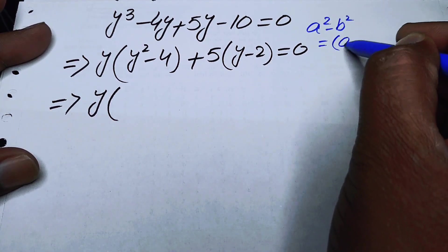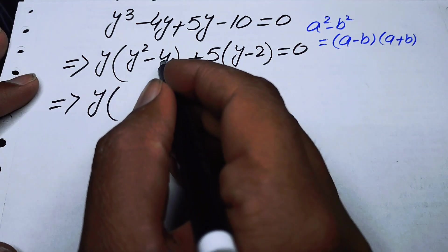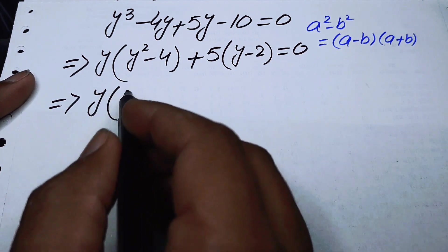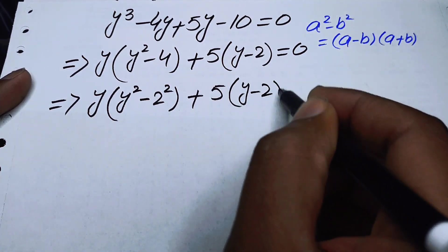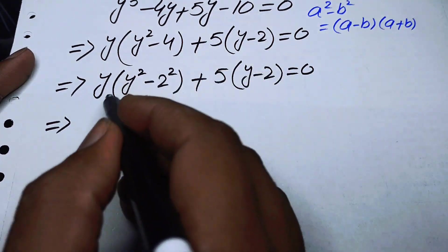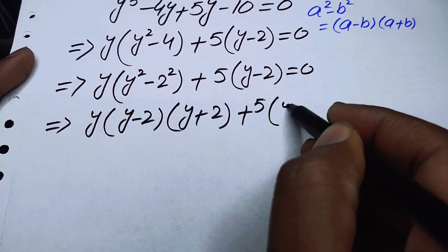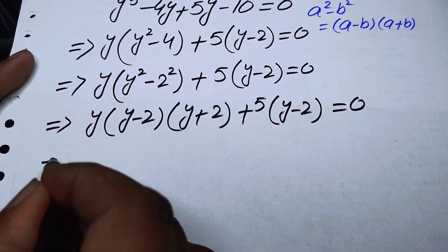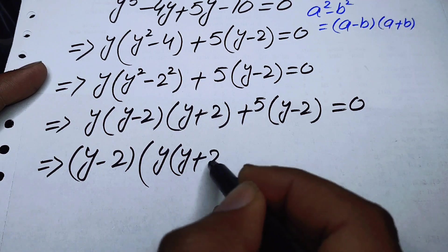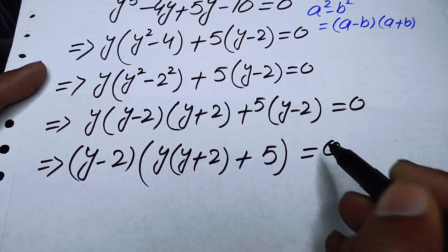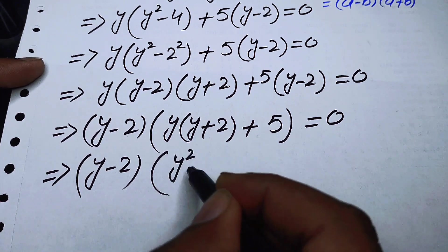We can apply the well-known identity: a squared minus b squared equals a minus b times a plus b. Writing 4 as 2 squared, we have y times of y squared minus 2 squared, plus 5 times y minus 2 is equal to 0. Applying the identity gives y times (y minus 2)(y plus 2) plus 5 times (y minus 2) equals 0. Taking y minus 2 as a common factor, we get y minus 2 times y squared plus 2y plus 5 is equal to 0.